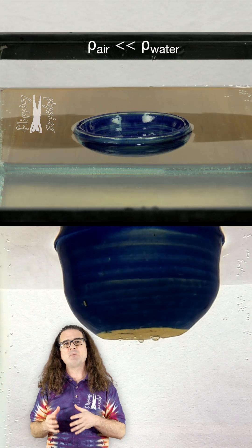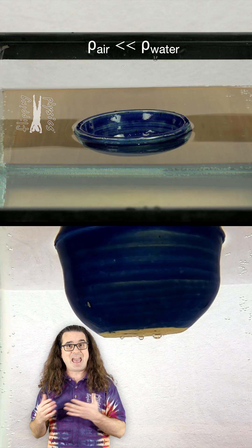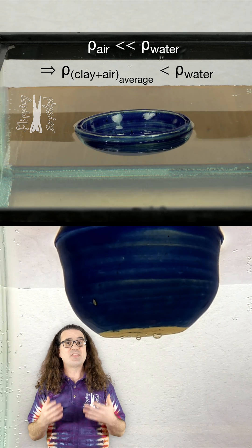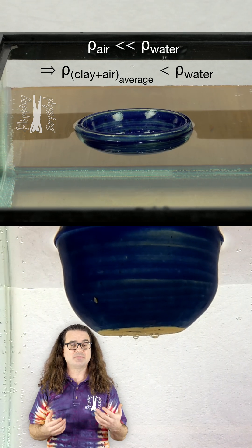This is because the density of air is much less than the density of water, and the average density of the clay and the air inside the bowl is less than the density of the fluid displaced by the bowl, and that is why a boat made of steel can float on water.